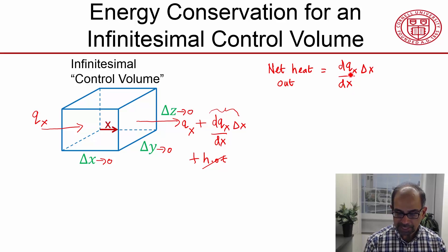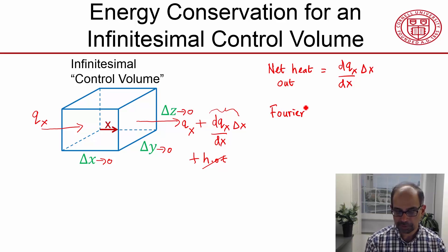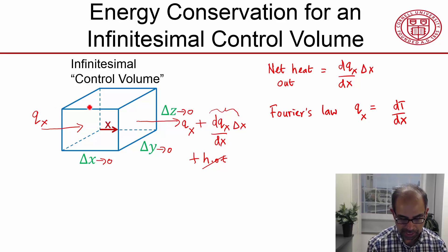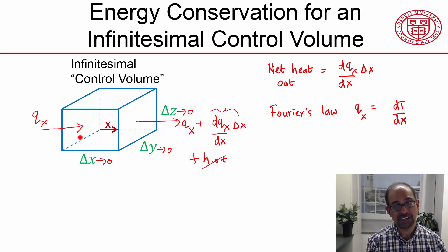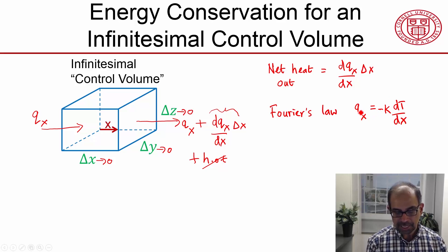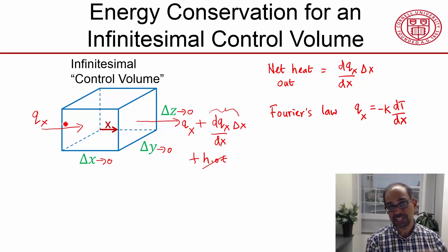Now I can relate that to the temperature using Fourier's Law, which many of you should have seen before. It is the foundation of heat conduction: the heat flow is proportional to the temperature gradient. So a larger temperature gradient gives more heat flow; no change in temperature means no heat flow through that face. There is a constant of proportionality k, and there is a negative sign because heat flows from higher to lower temperature — that is, in the direction of decreasing temperature.